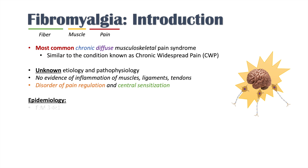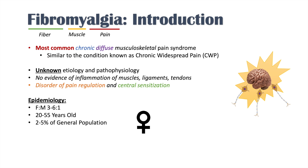The epidemiology of fibromyalgia is predominantly female, with about a three-to-six-to-one ratio of females to males. The general age of onset is anywhere between 20 to 55 years old. About two to five percent of the general population has fibromyalgia, and the prevalence increases with age.